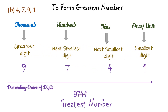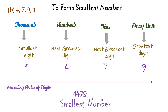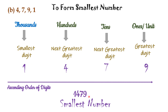Part B: By using the same logic, we get the greatest number as 9741, as simply हमें digits को descending order में arrange करना है. And the smallest number is 1479, which is an arrangement of digits in ascending order.